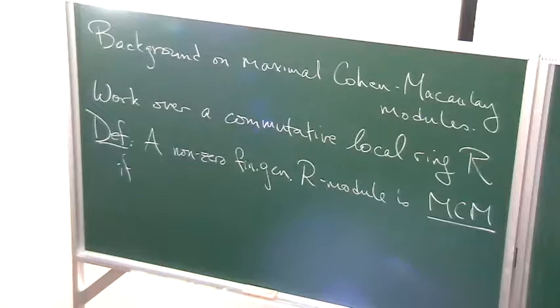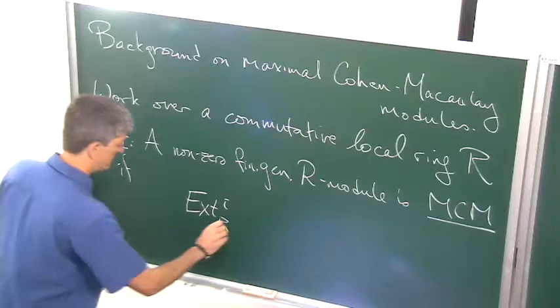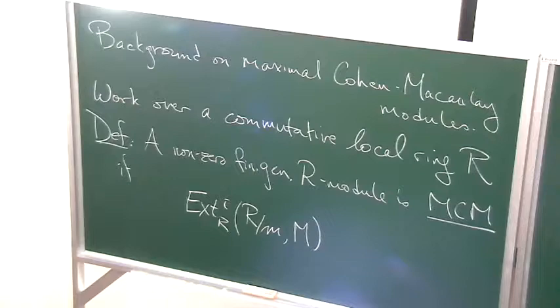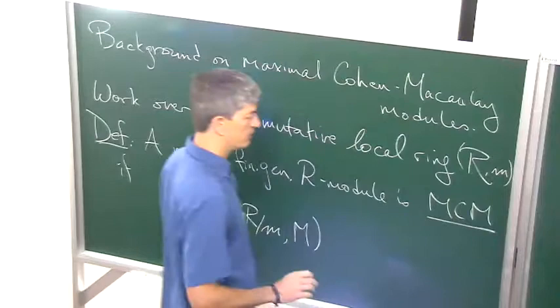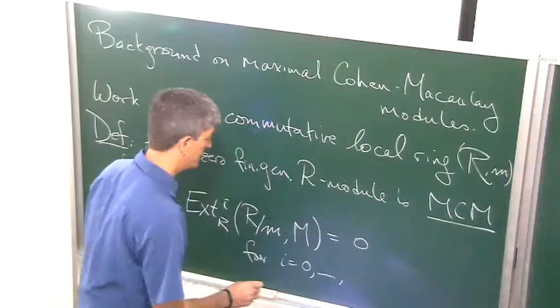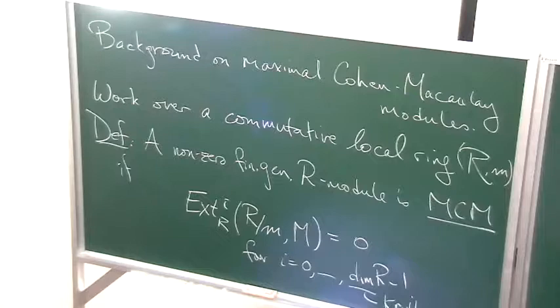And there are several ways to do this. I'm going to take the most compact and least revealing, and then try to explain what it means. Ext^i of R mod M, where M is the unique maximal ideal, Ext^i of the residue field into our module is 0 for i from 0 up to the dimension of our ring minus 1. And here dimension I mean Krull dimension. So as I say, this is the most compact but maybe a little mysterious.